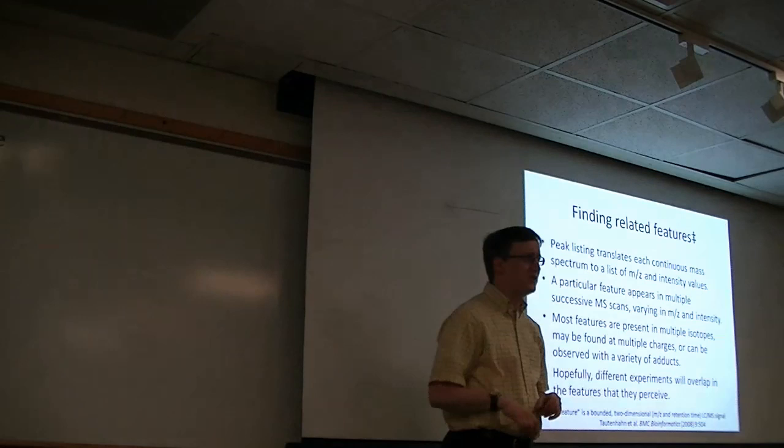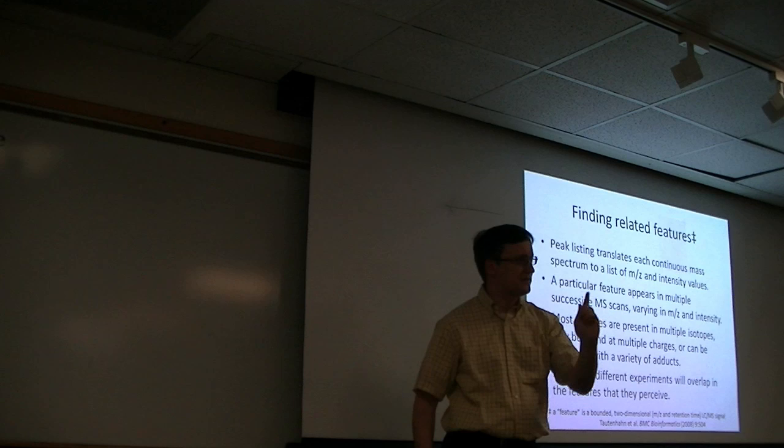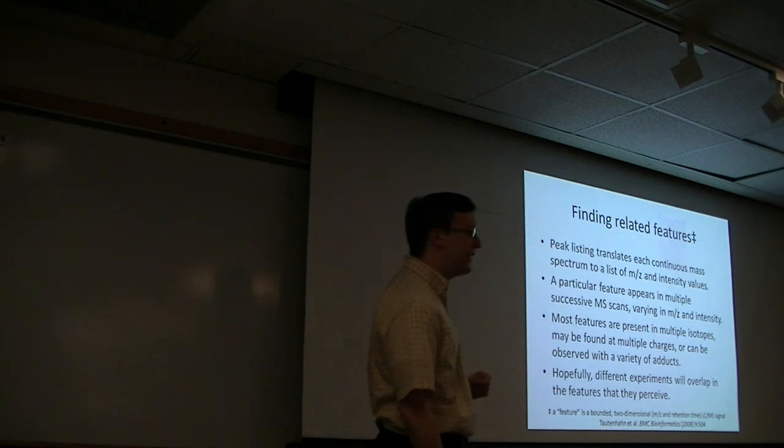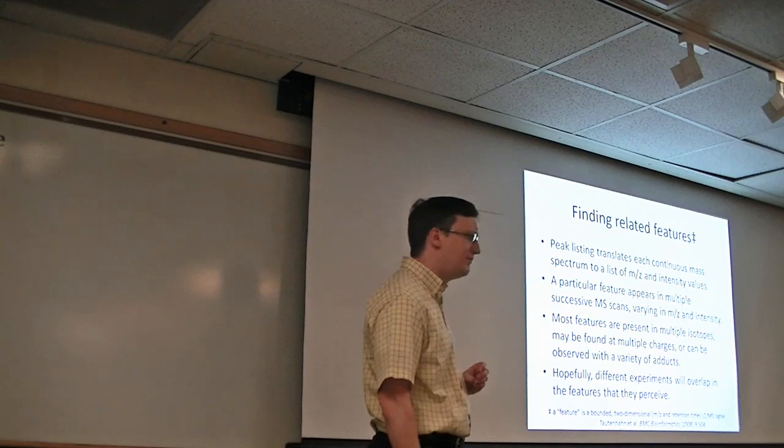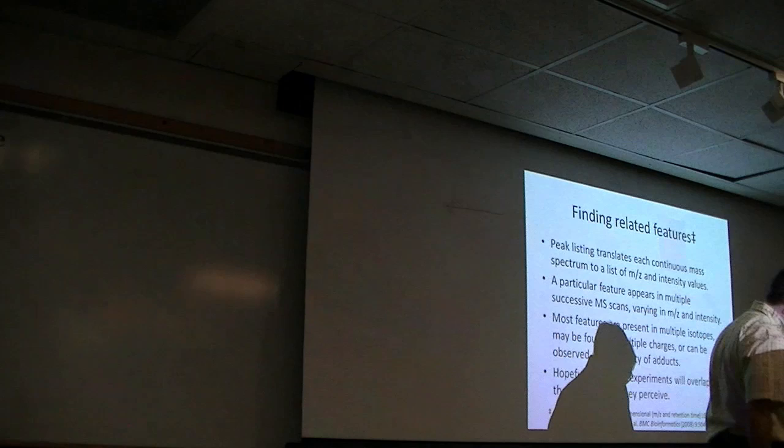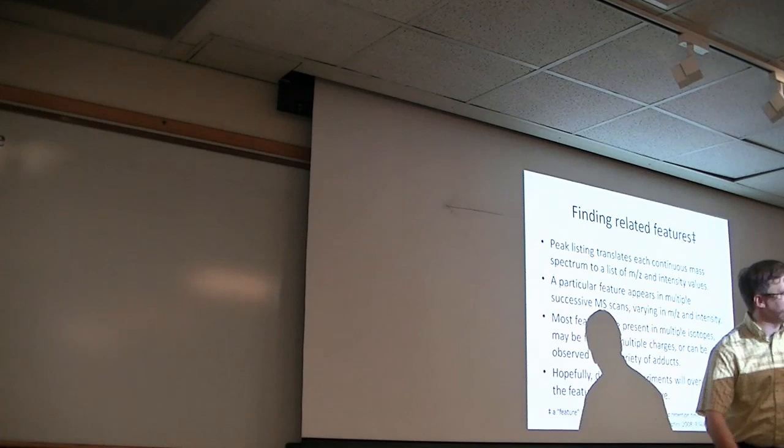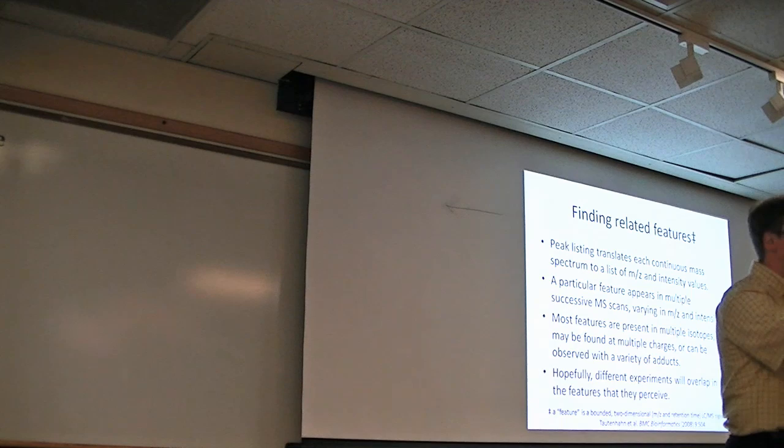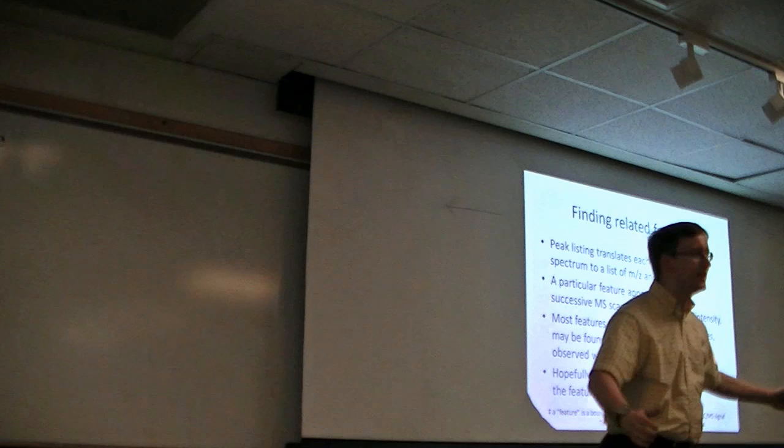I've already mentioned features by talking about the persistence of a peak at different time slices, at different consecutive MS scans. In the paper from 2008, they define a feature as a bounded two-dimensional M over Z and retention time LC-MS signal. You might imagine that I have a square here on the floor, and now I have M over Z on one axis and retention time on the other. We can imagine this little mountain growing up out of the floor, which is our third axis, intensity. We're looking for these features that form these little mountains on our little topographic map of the LC-MS experiment.